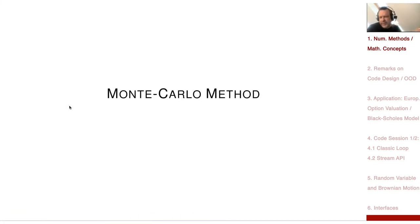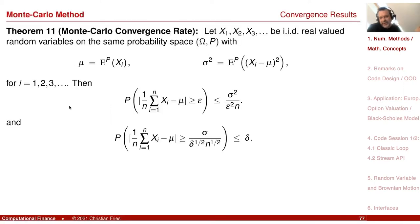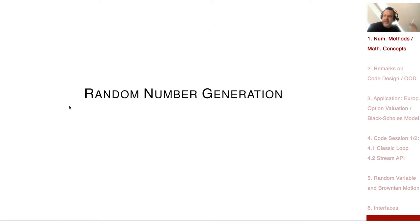Then we had the Monte Carlo method as a numerical method. We learned how to approximate the expectation — we can approximate it by a finite sample vector, taking the average. That's a clear application of Kahan summation. Then to generate such sample vectors, we needed random number generation.